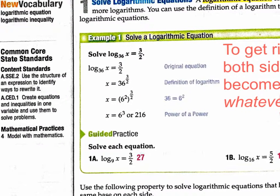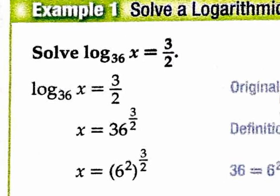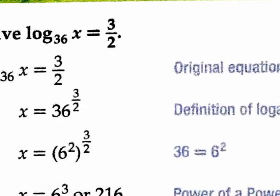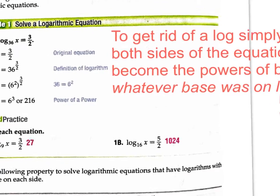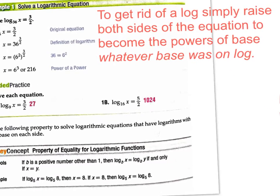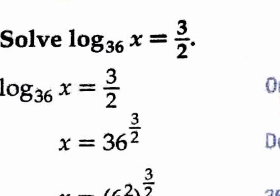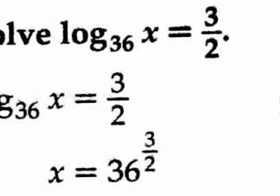Example 1: solve log base 36 of x equals 3 halves. They just jump right into it and get the answers, but you can't really understand it unless you have these notes written down. To get rid of a log, simply raise both sides of the equation to become the powers of whatever base was on the log. So right here, I want to get rid of the log base 36. I need to do the inverse of log base 36, which is really raising it to be the power of base 36.